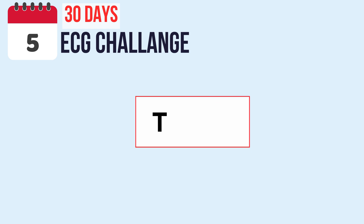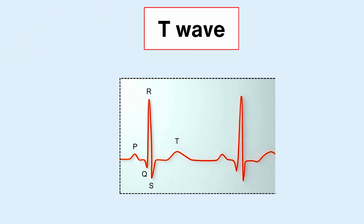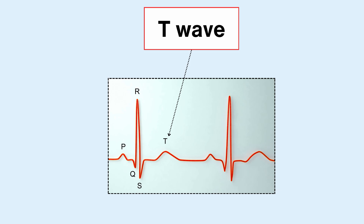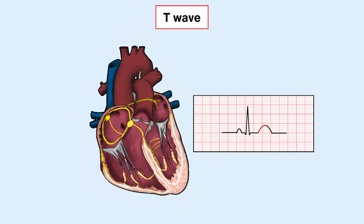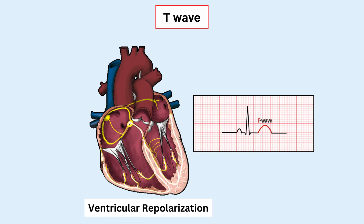Today, let's pivot our attention towards a crucial aspect: the T-wave. Just as we've dissected the mysteries of the ST segment, we're now primed to unravel the enigma of the T-wave together. So what exactly is the T-wave and why is it significant? After the frenetic activity of the QRS complex subsides, the T-wave emerges as a tranquil phase, akin to the calm seas post-storm. It signifies the repolarization of the ventricles — a phase where they reset and prepare for the next cycle of cardiac activity.